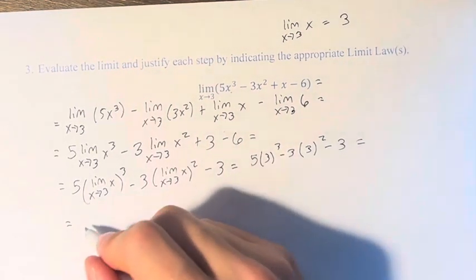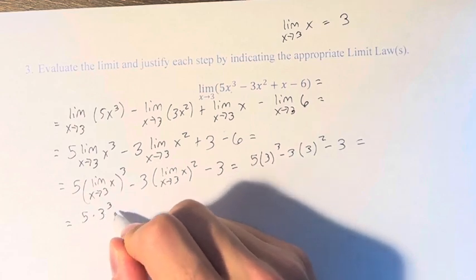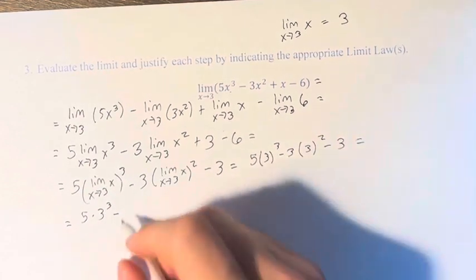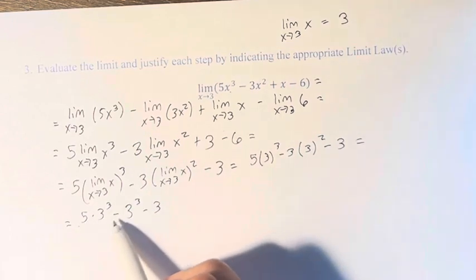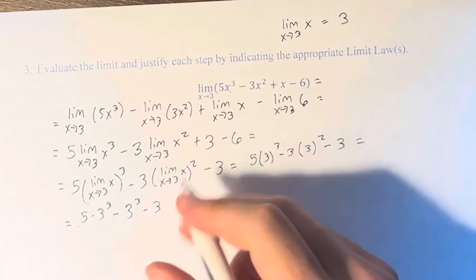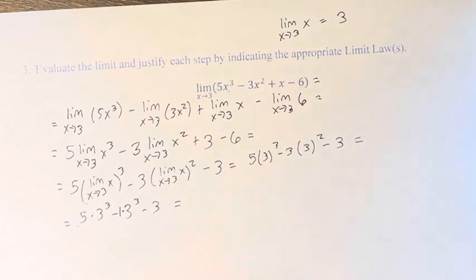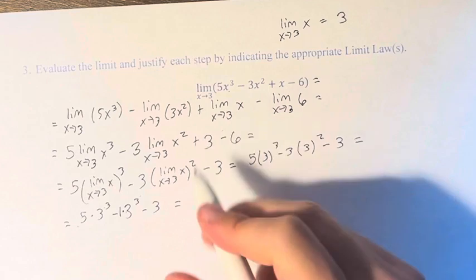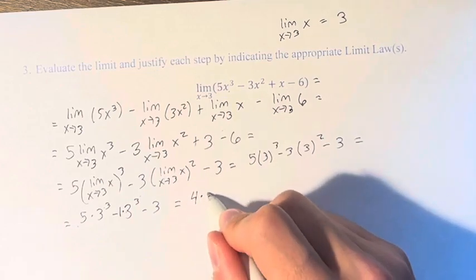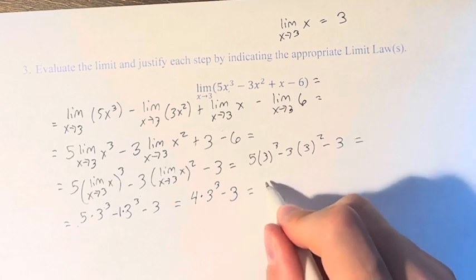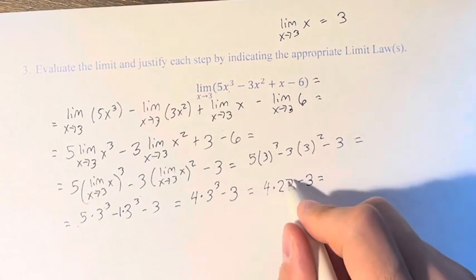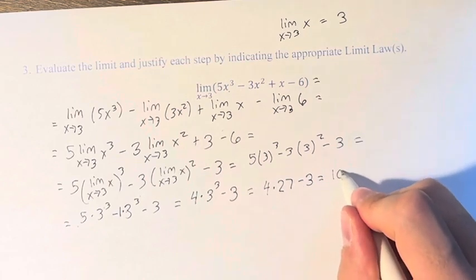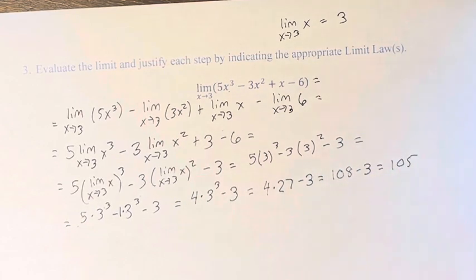What is this equal to? Well, this is 5 times 3 cubed minus 3 times 3 squared is 3 cubed. So 5 times 3 cubed minus 3 cubed. Think of this as a 1. 5 of this minus 1 of this is equal to 4 of this. So this is 4 times 3 cubed minus 3. 3 cubed is 27. 27 times 4 is 108. Minus 3 is 105.